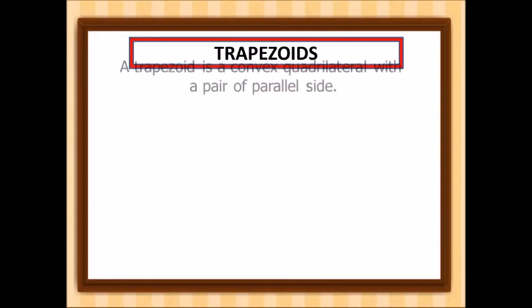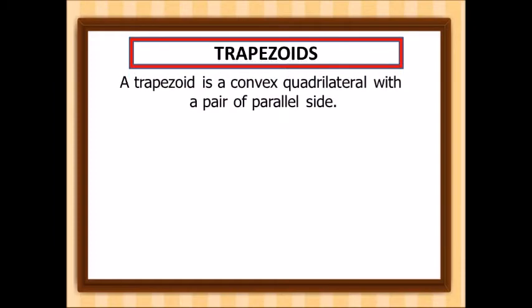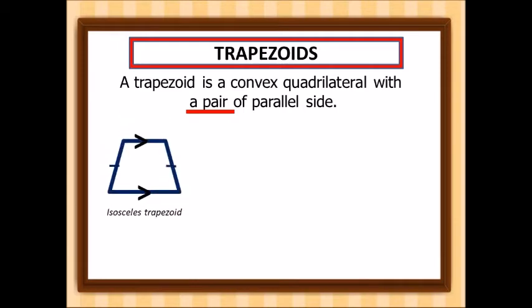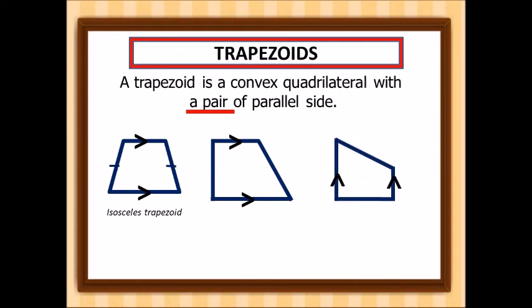Good morning. This time let's learn about trapezoids. A trapezoid is a convex quadrilateral with a pair of parallel sides. These are different examples of trapezoids — as you can see, there's a pair of parallel sides.